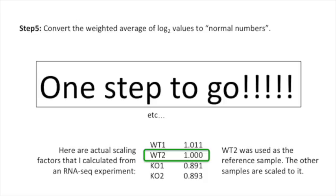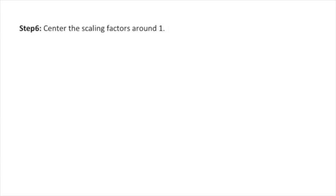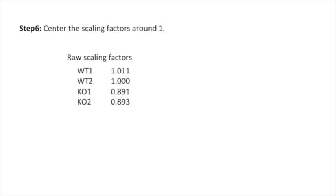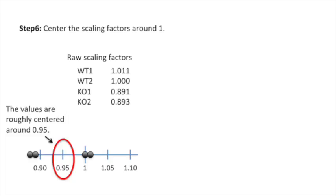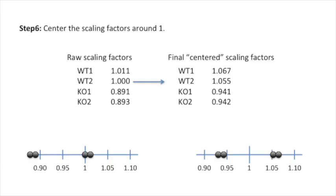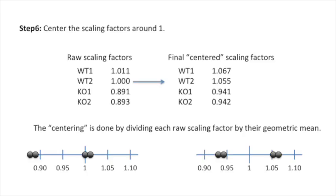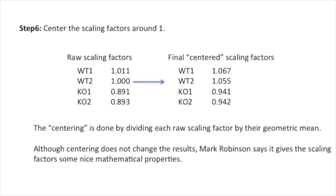Step 6: center the scaling factors around one. Here are the raw scaling factors — the values are roughly centered around 0.95. Here are the final centered scaling factors, shifted so that they are centered on one. The centering is done by dividing each raw scaling factor by their geometric mean. Although centering does not change the results, Mark Robinson, the guy who wrote this method, says it gives the scaling factors some nice mathematical properties — sort of an artistic signature on a mathematical formula. That's it! Now you know how scaling factors are calculated in EdgeR. Tune in next time for another exciting StatQuest.